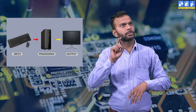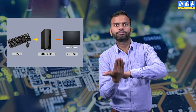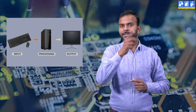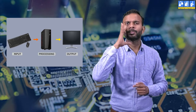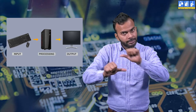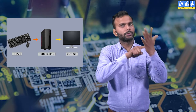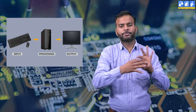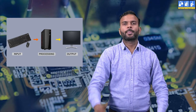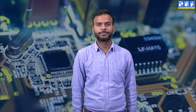After input and processing, the result we get from the machine is the output. For example, getting a printout from a printer — this is output. These are the three basic functions.